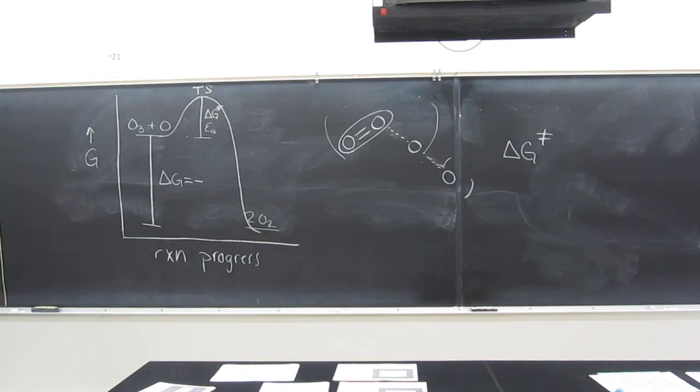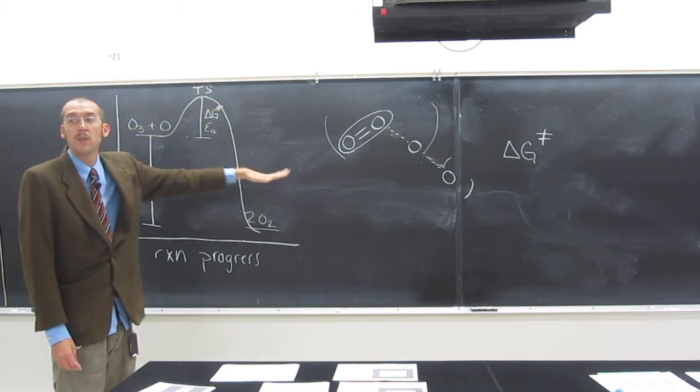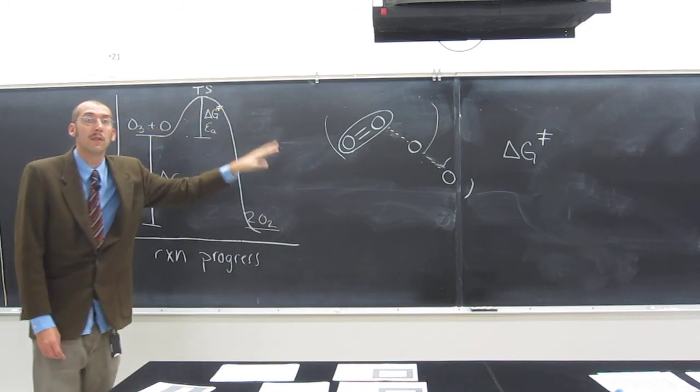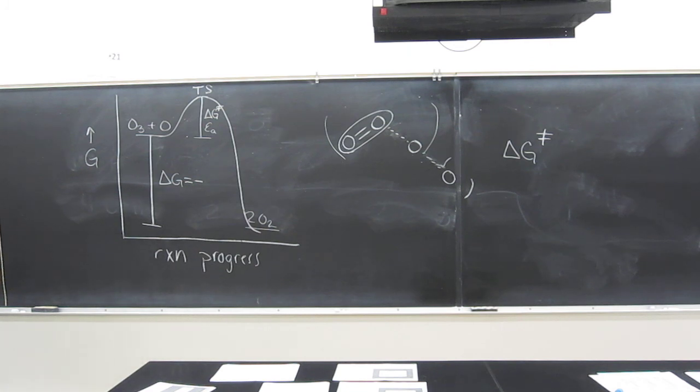Just remember, transition state—if this was a two hump, there would be an intermediate. We'll talk about those in a second. Any questions on that one?